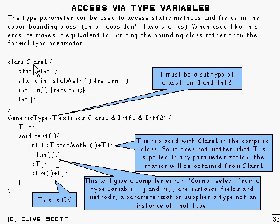For example, we've got something like class1 with a static field in it, perhaps a static method, and a couple of non-static things down here. Then if we say generic type T extends class1 and Inf1 and Inf2, then inside this generic class you can say something like T.statMeth.